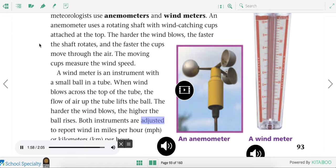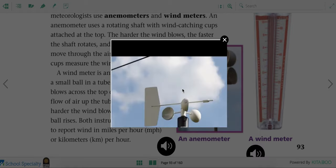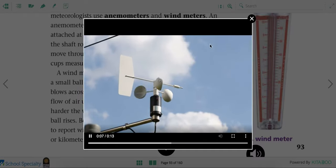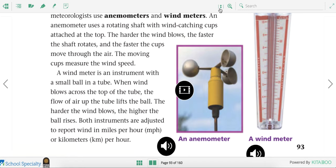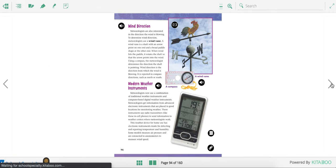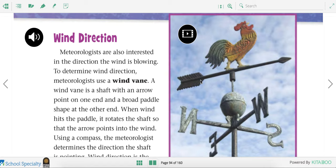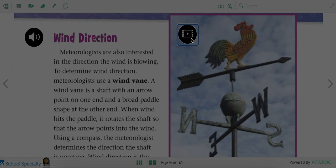Both instruments are adjusted to report wind in miles per hour, MPH, or kilometers per hour. Some meteorologists also measure wind. This is one instrument they use to measure the wind. Not only do they measure the wind, they need to know what direction the wind is going.